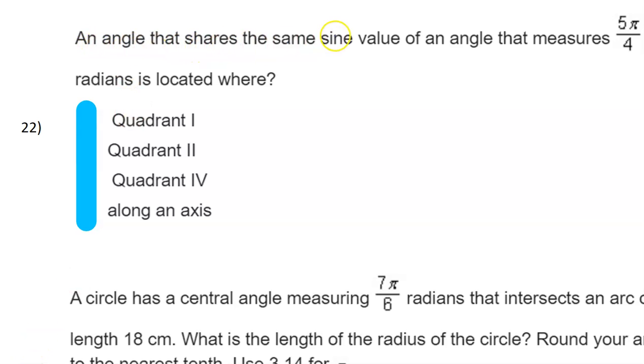An angle that shares the same sine value of an angle that measures 5π over 4 radians is located where? In which quadrant or on what axis?